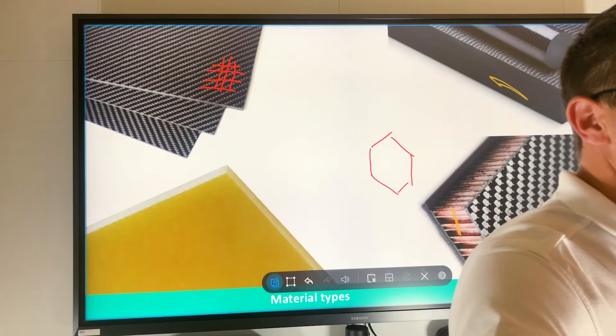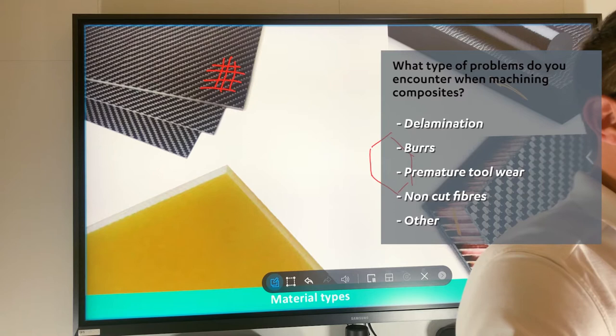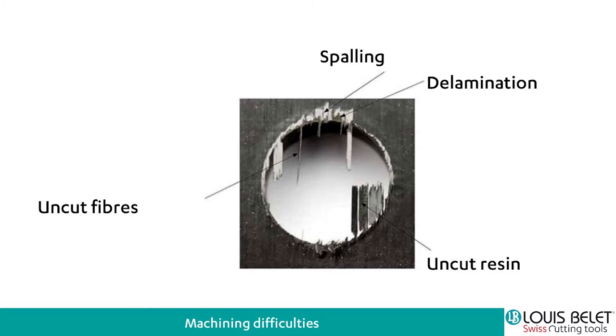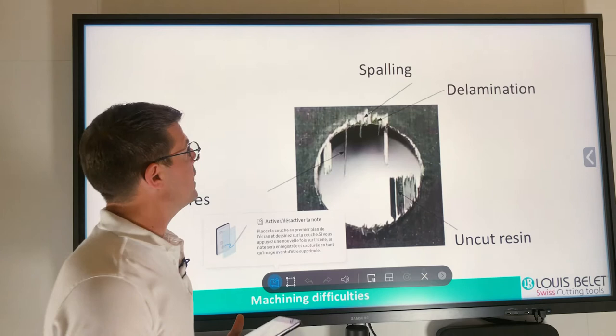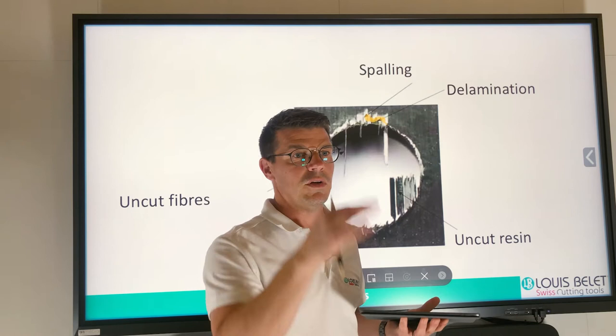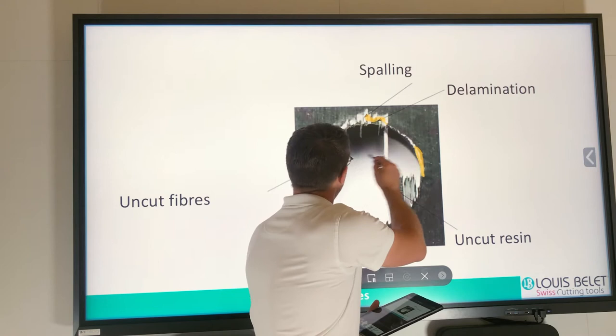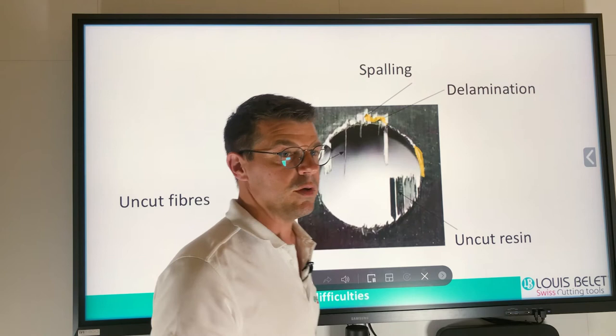Let me introduce the most common problems our customers have while machining composites. The delamination you see here is a kind of brittle separation of the different layers — one of the most frequent problems our customers encounter. Then of course the burrs: you can see burrs at the entrance or at the exit of the hole or the milled area.